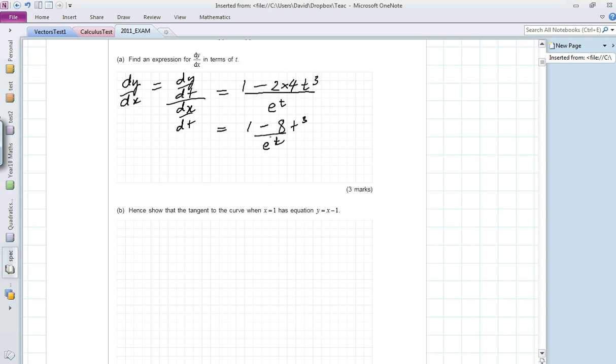We're going to use this derivative to work out the equation of the tangent to the curve at the point x equals 1. First thing we want to do is work out when x equals 1, what the value of t is.